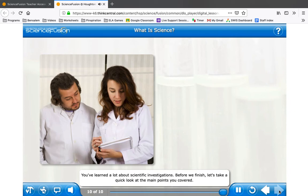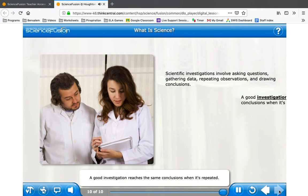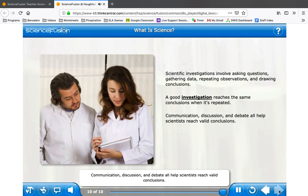You've learned a lot about scientific investigations. Before we finish, let's take a quick look at the main points you covered. Scientific investigations involve asking questions, gathering data, repeating observations, and drawing conclusions. A good investigation reaches the same conclusions when it's repeated. Communication, discussion, and debate all help scientists reach valid conclusions.